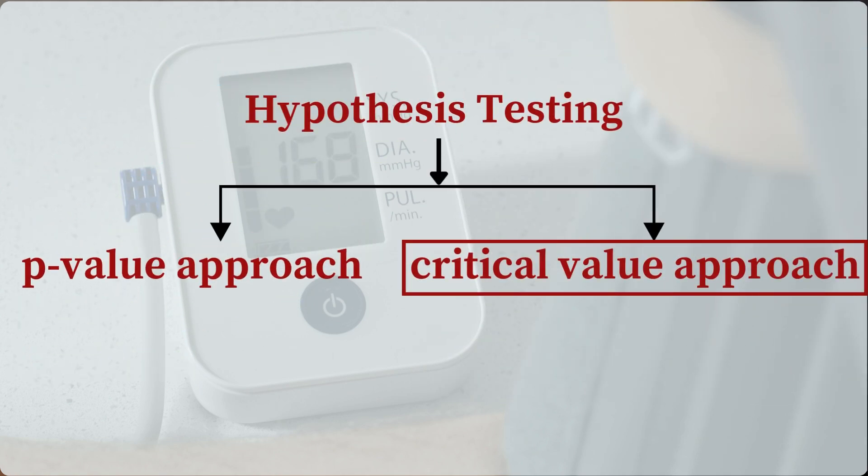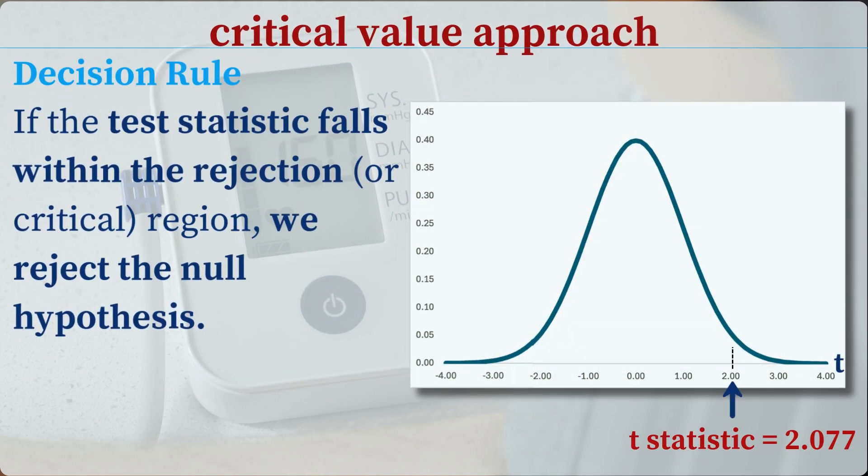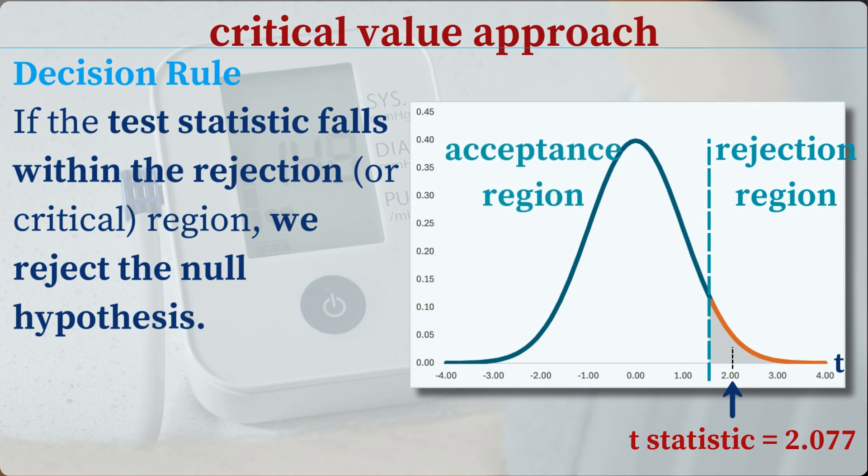Alternatively, the critical value approach defines a rejection region in the sampling distribution. The location of the rejection region depends on the significance level, alpha, the type of test, one-tailed or two-tailed, and the test statistic being used.